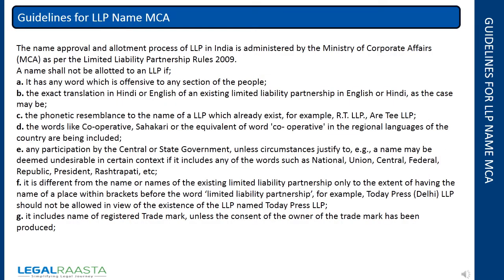Guidelines for LLP name under MCA: The name approval and allotment process of LLP in India is administered by the Ministry of Corporate Affairs (MCA) as per the Limited Liability Partnership Rules 2009. A name shall not be allotted to an LLP if: A. It has any word which is offensive to any section of the people. B. It is the exact translation in Hindi or English of an existing Limited Liability Partnership name in English or Hindi, as the case may be.